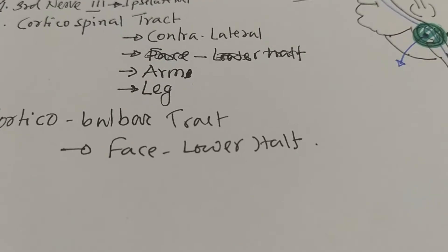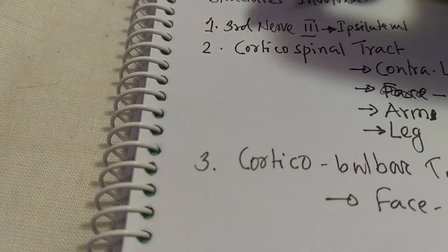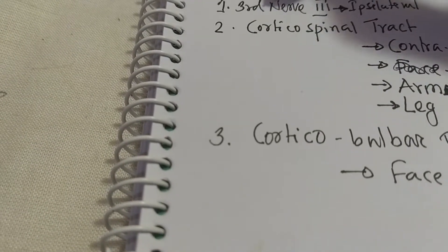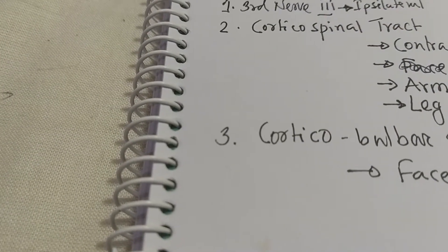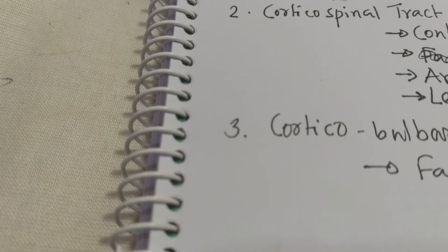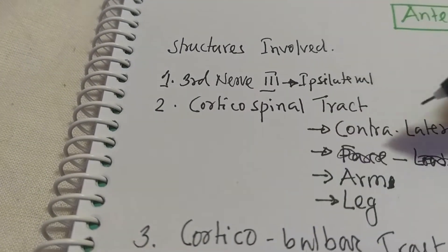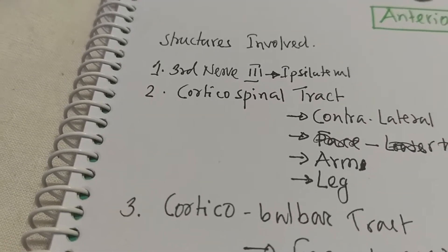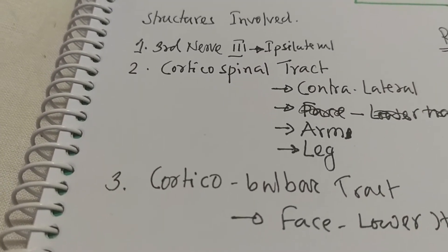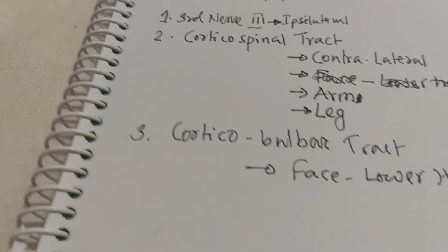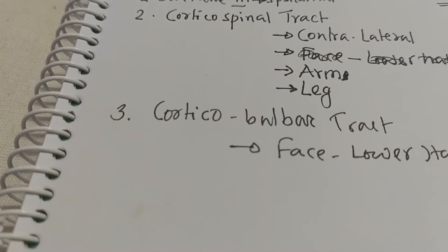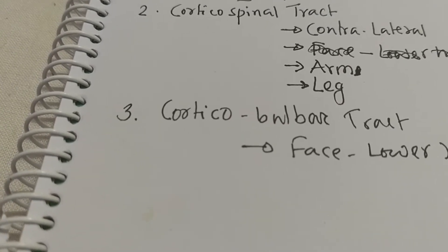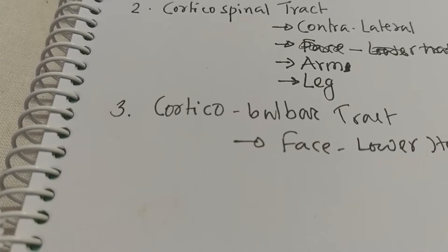To summarize, the structures involved in this lesion are: the third nerve nucleus — ipsilateral; the corticospinal tract — manifesting as contralateral arm and leg weakness; and the corticobulbar tract — manifesting as upper motor type of facial nerve palsy with deviation of the face.